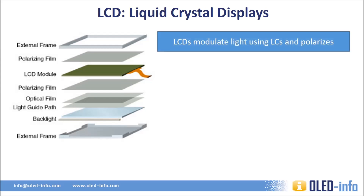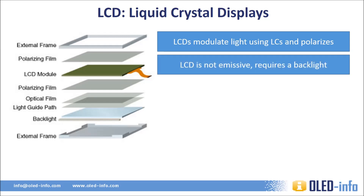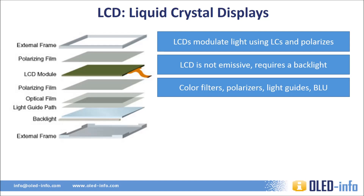LCD is a display technology that shouldn't have made it. The basic technology behind LCD is the liquid crystal, a transparent material that can be turned into a polarized light filter when electricity is applied. Inside an LCD is a white light source — either a fluorescent lamp or an LED array. The light is then polarized using a polarizing film, and the liquid crystal module either lets the light through or blocks it. So an LCD is based on a technology that blocks light, not emits light, like in an OLED or plasma panel.